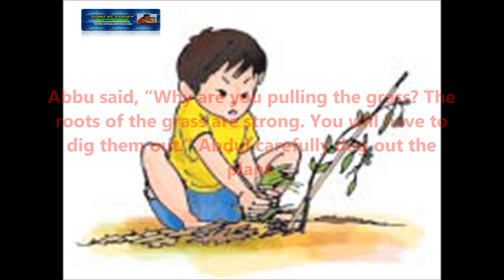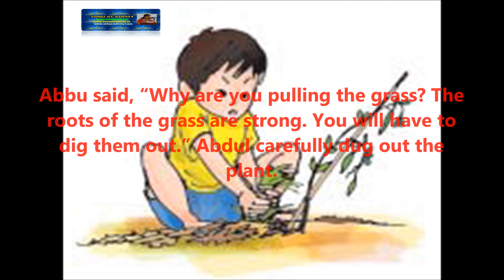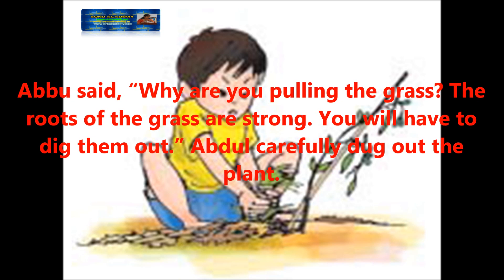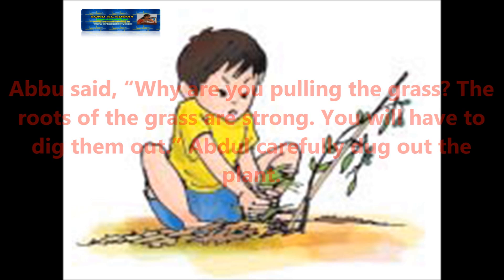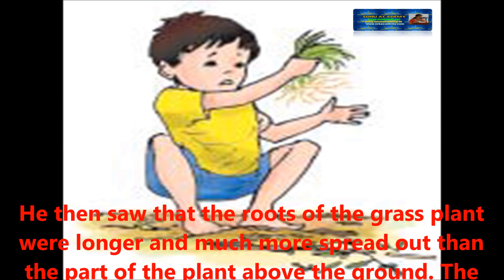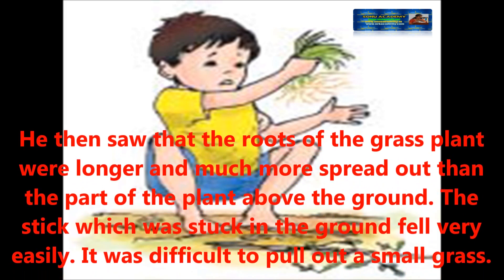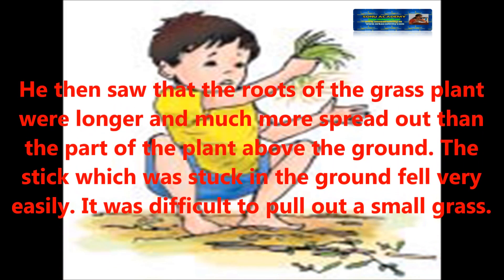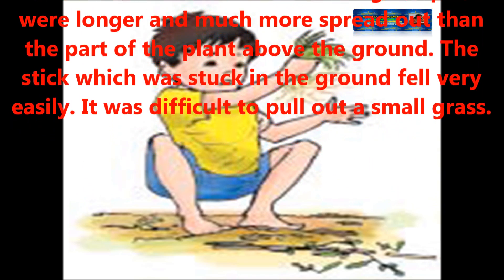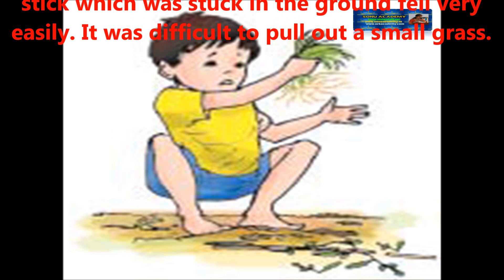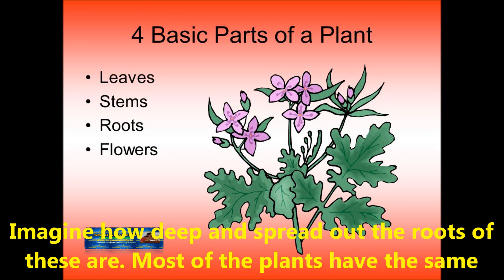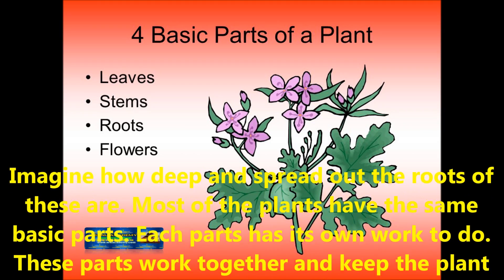Abbu said, why are you pulling the grass? The roots of the grass are strong. You will have to dig them out. Abdul carefully dug out the plant. He then saw that the roots of the grass plant were long and much more spread out than the part of the plant above the ground. The stick when stuck in the ground fell very easily, but it was difficult to pull out a small grass. Children, imagine how deep and spread out the roots of grass are.